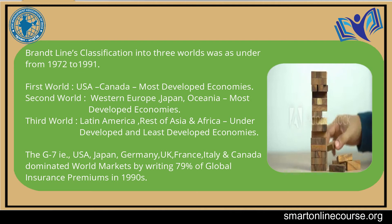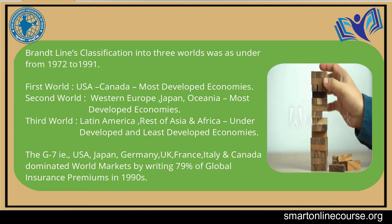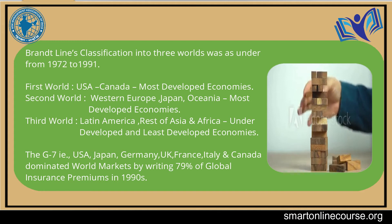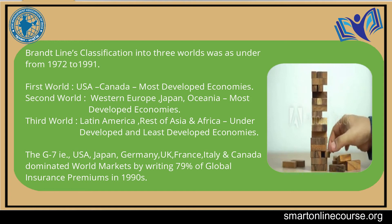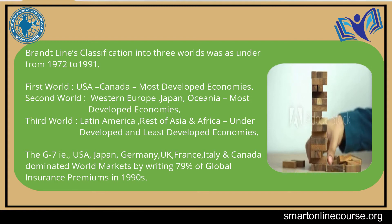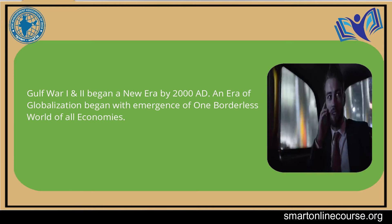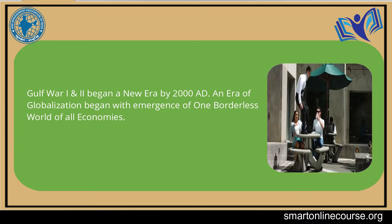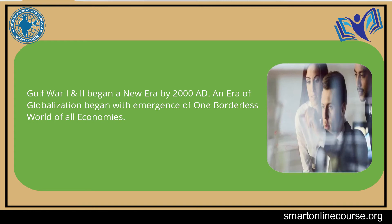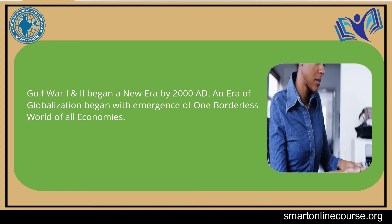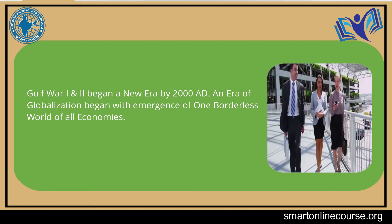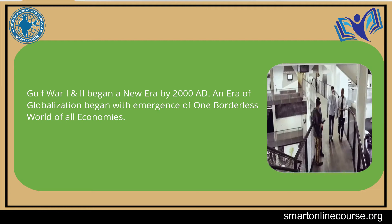The G7 — the most developed countries: USA, Japan, Germany, UK, France, Italy, and Canada — dominated world markets, writing 79% of global insurance premiums in the 1990s. Gulf War I and Gulf War II began a new era, and by the end of the 20th century, an era of globalization emerged as a borderless world of all economies. The first, second and third world classifications were replaced by liberalization and globalization.